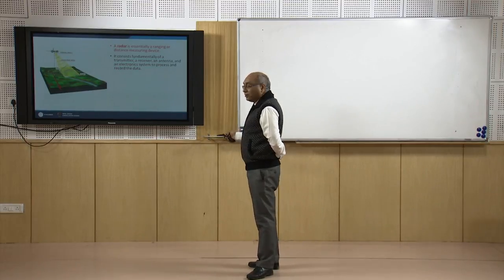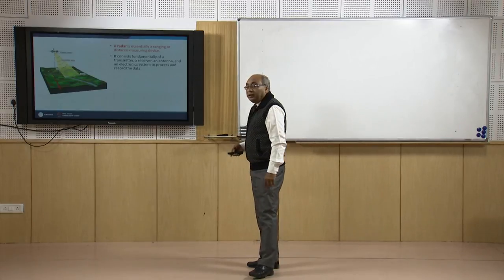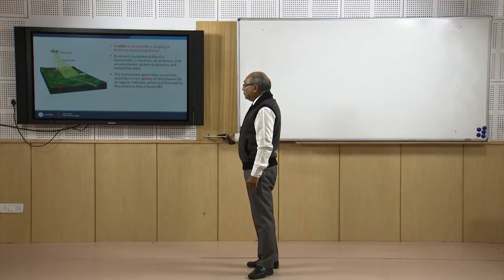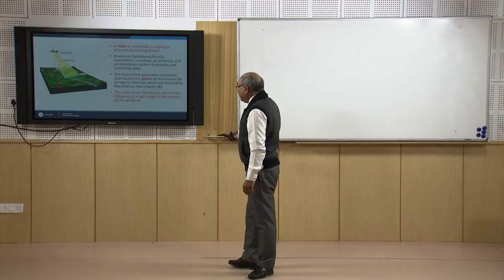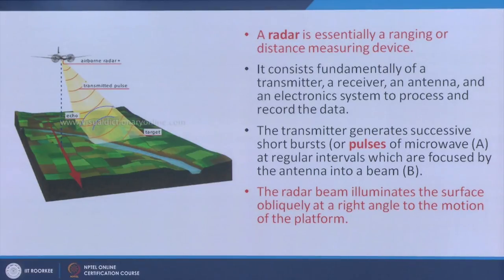Radar fundamentally consists of a transmitter, a receiver, an antenna, and an electronic system to process and record the data. The transmitter generates successive short bursts or pulses of microwave at regular intervals, which are focused by the antenna into a beam. The radar beam illuminates the surface at an oblique angle — not nadir. For passive remote sensing, nadir beam is most common, but for radar, the oblique angle allows the satellite to collect the backscatter as it moves forward.